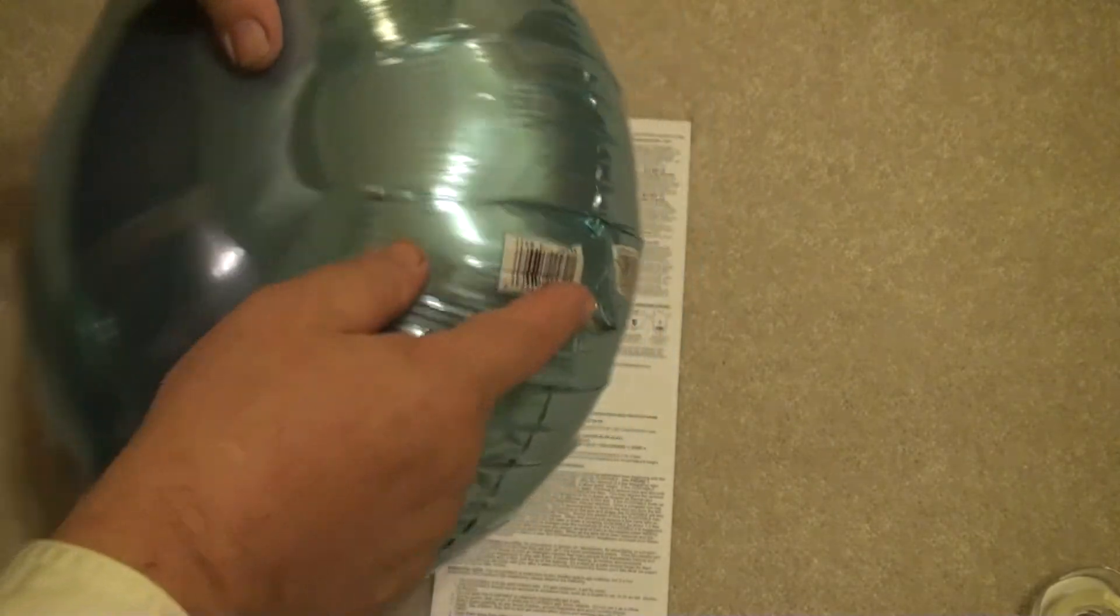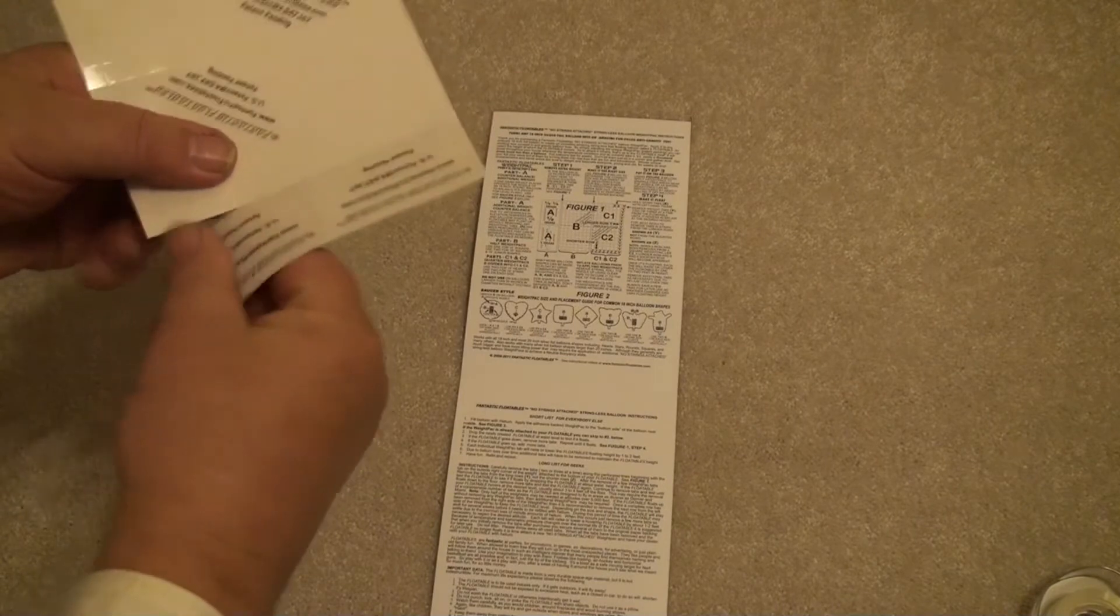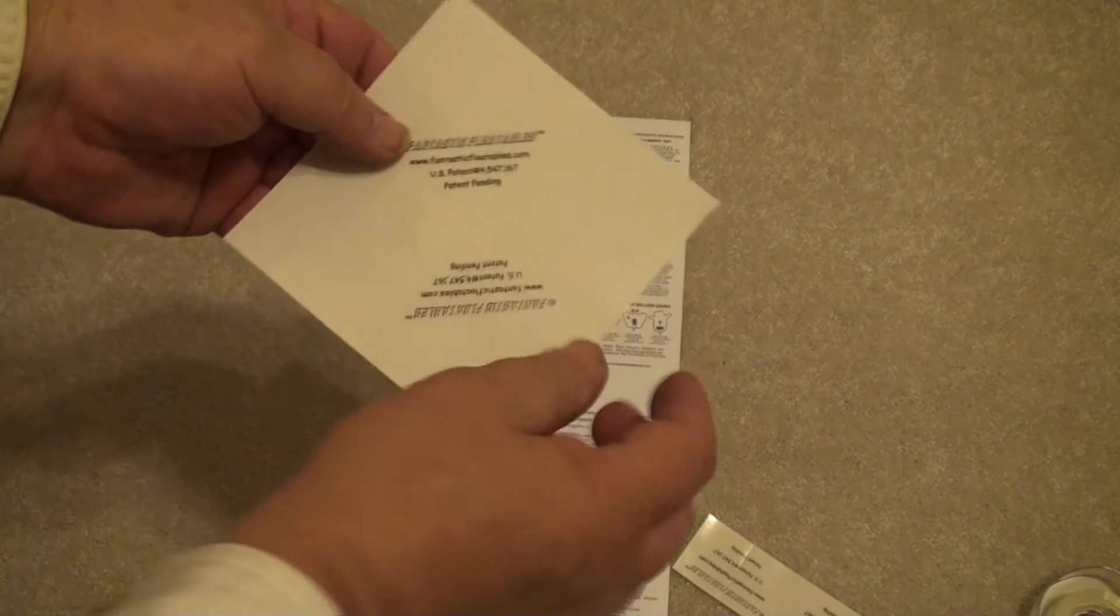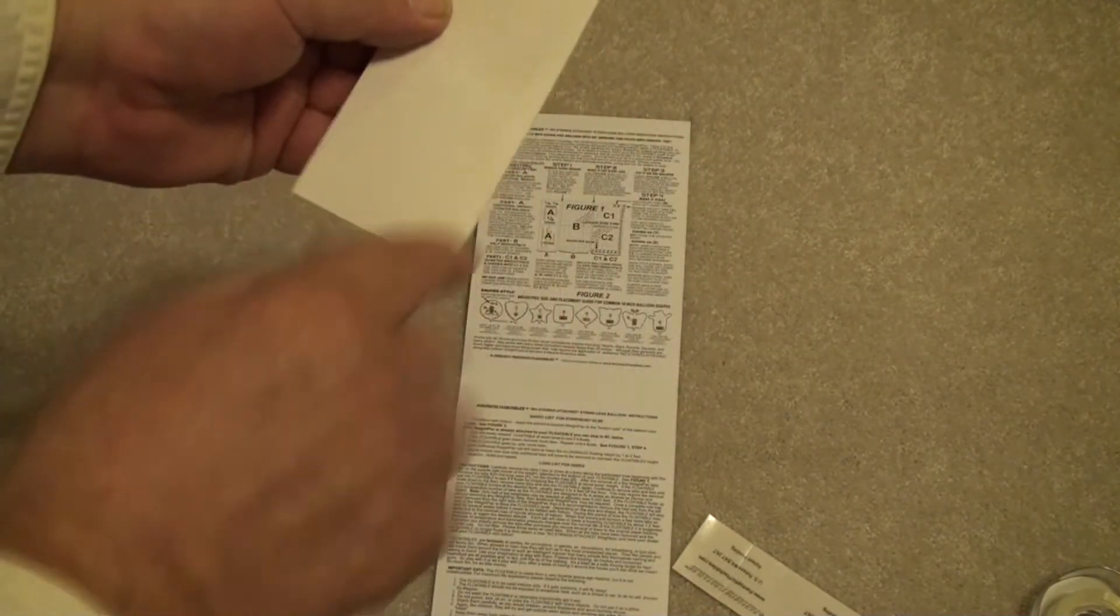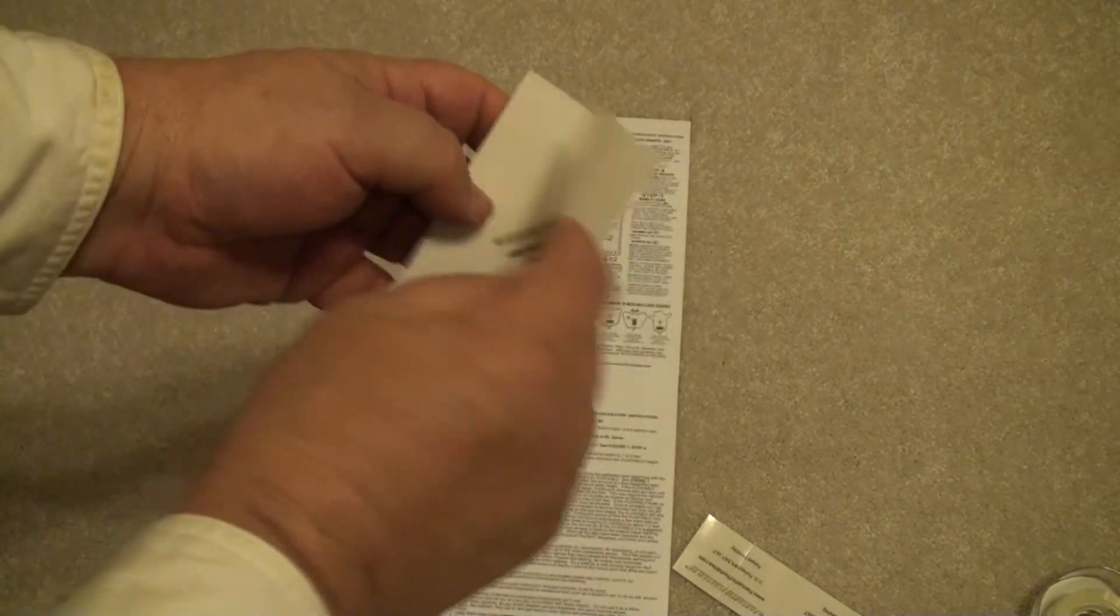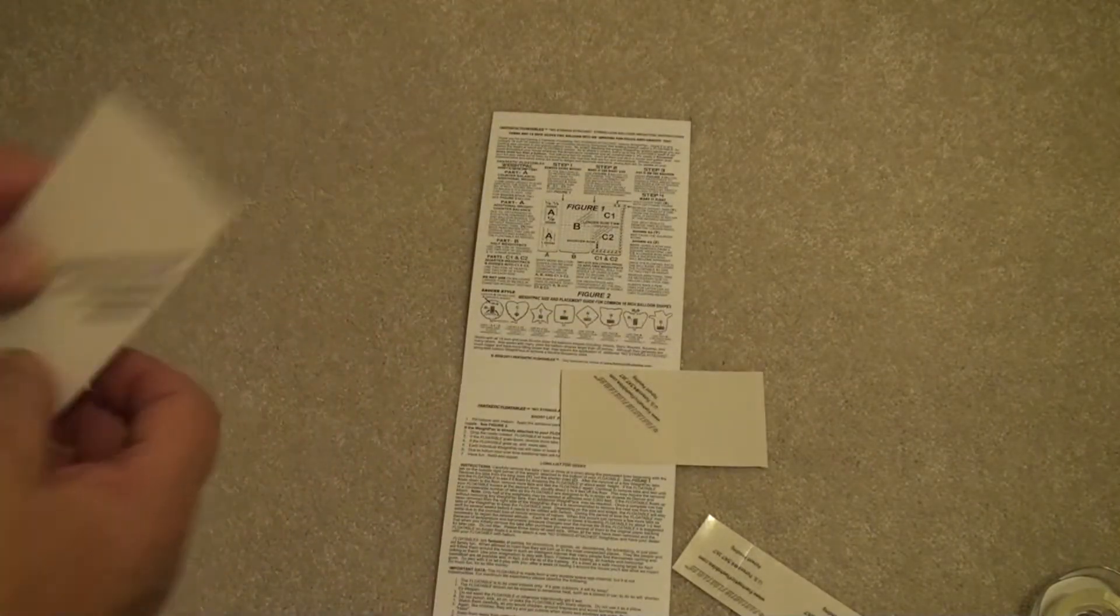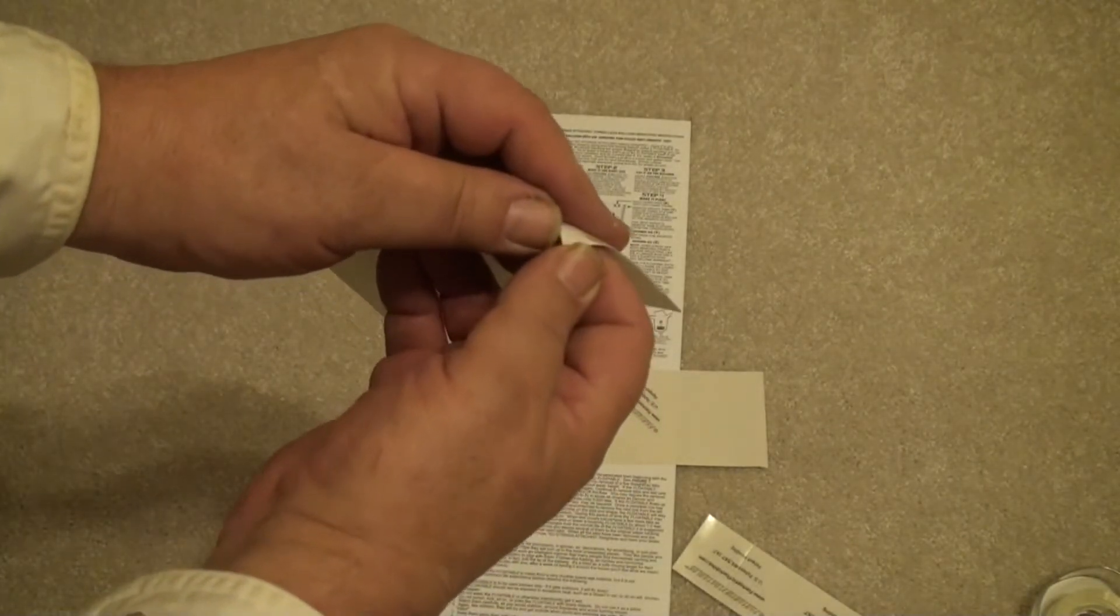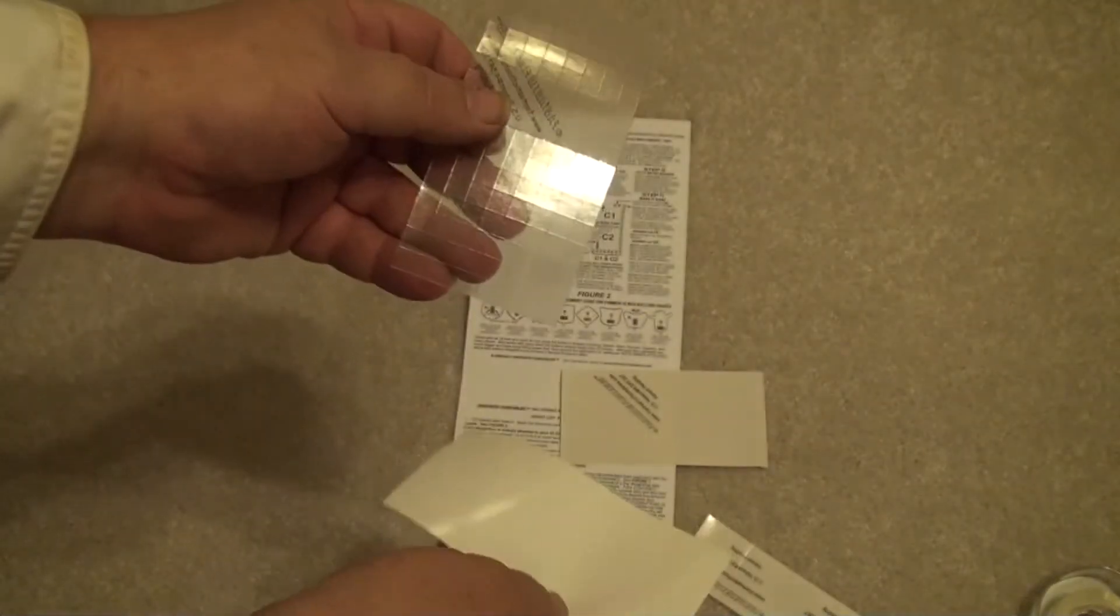The next step is to locate where you want the balloon weight. Take the no strings attached balloon weights and remove the counterbalances. We'll be using those later. This will work for two balloons, so you fold it in half on the crease and fold it several times so it separates easily. Then remove the paper backing from the clear plastic weight tabs. This paper backing should be saved, and you can put little tabs that you've removed on them for later use.